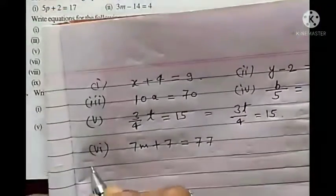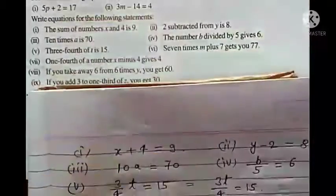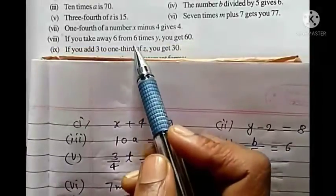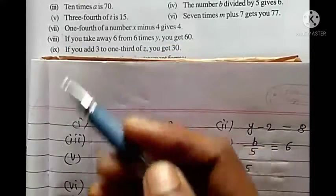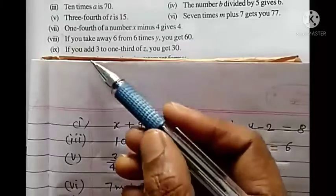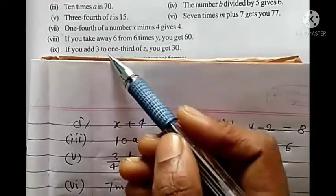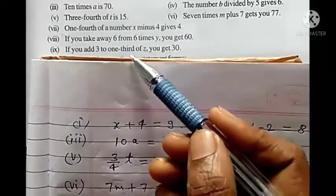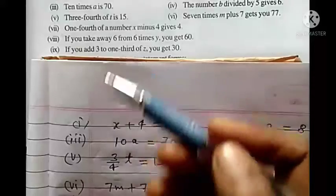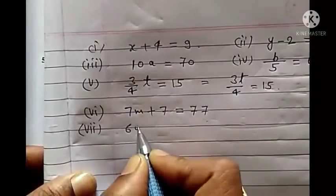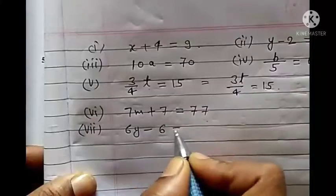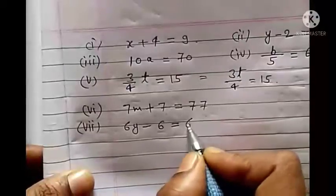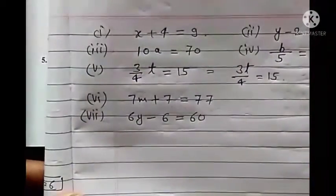Seventh: if you take away 6 from 6 times y, you get 60. 'Take away' also means subtract. So 6 times y minus 6 equals to 60. That is the equation.